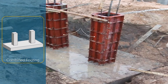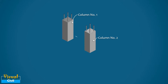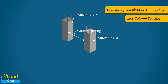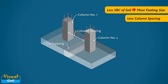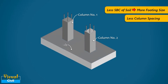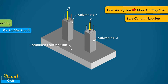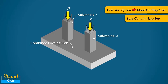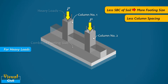The next type of shallow foundation is combined footing. When the column spacing of two adjacent columns is less, or the SBC of soil is less, the isolated footings of these columns may overlap, leading to the construction of a combined footing. When columns are subjected to relatively lighter loads, a simple slab-type combined footing can be used. But if the loads are heavy, a beam-slab type combined footing can be used to economize material.